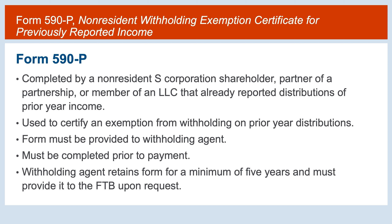Form 590-P is completed by a non-resident S corporation shareholder, partner in a partnership, or member of an LLC to certify an exemption from withholding on current year distributions of an S corporation's, partnership's, or LLC's prior year California source income. The form must be provided to the withholding agent as proof of a qualified exemption for previously reported California source income and is due prior to payment.